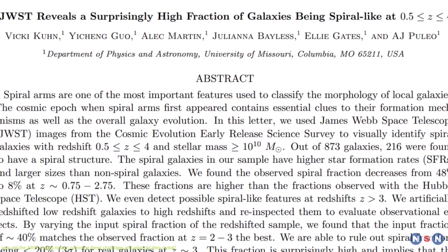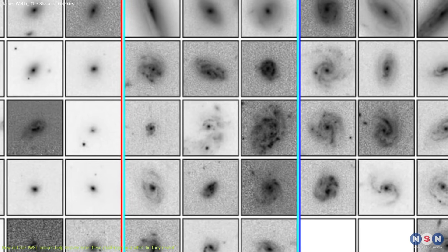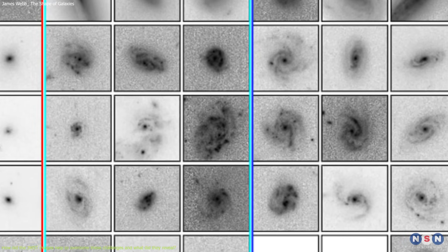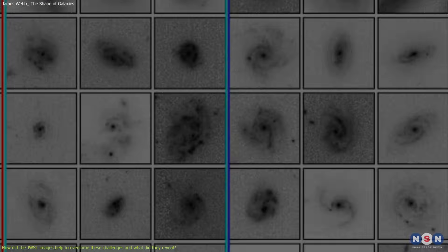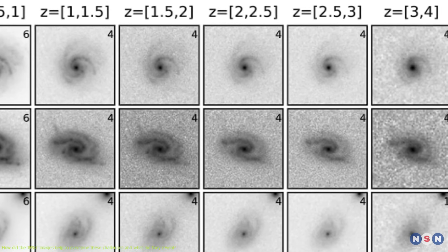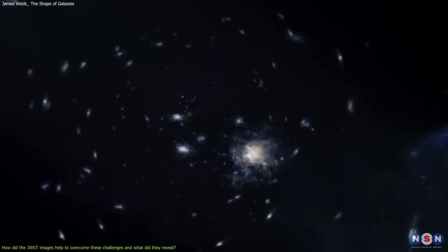The study also used a technique called visual classification, which means that the authors of the paper looked at the images and categorized the galaxies into different types based on their shape and structure. It focused on the galaxies that have a redshift between 0.5 and 4, which means that they are between 5 and 12 billion light-years away from us.